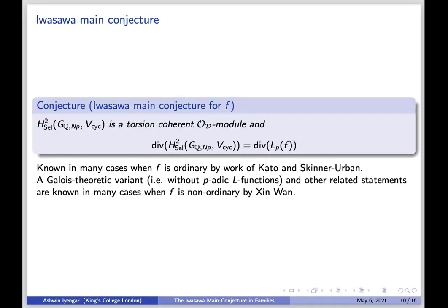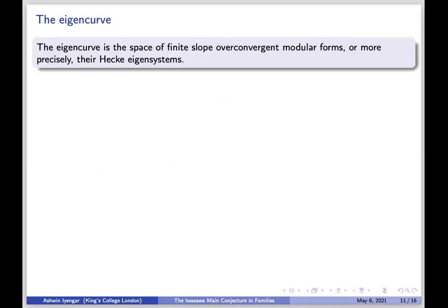The rest of the talk is about what I'm trying to do: take this conjecture and state it for families of modular forms, explaining how you can interpolate this conjecture into p-adic families. The eigencurve is the space of finite slope overconvergent modular forms, or more precisely their Hecke eigensystems. This is a generalization of the notion of a modular form where, instead of complex coefficients, you have p-adic coefficients that vary nicely in families. When you define the eigencurve, you look at a Hecke algebra acting on such spaces and then p-adically interpolate. To construct the eigencurve, you first vary the weight p-adically — in the p-adic theory, weights are replaced by characters from Z_p^× to C_p^×.